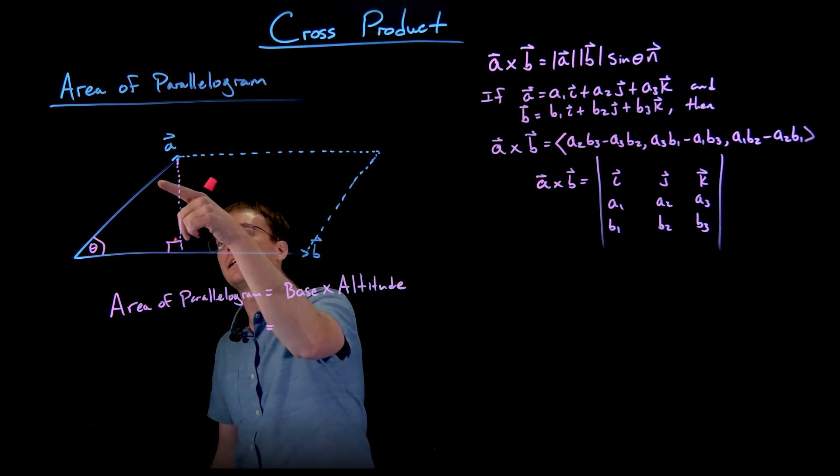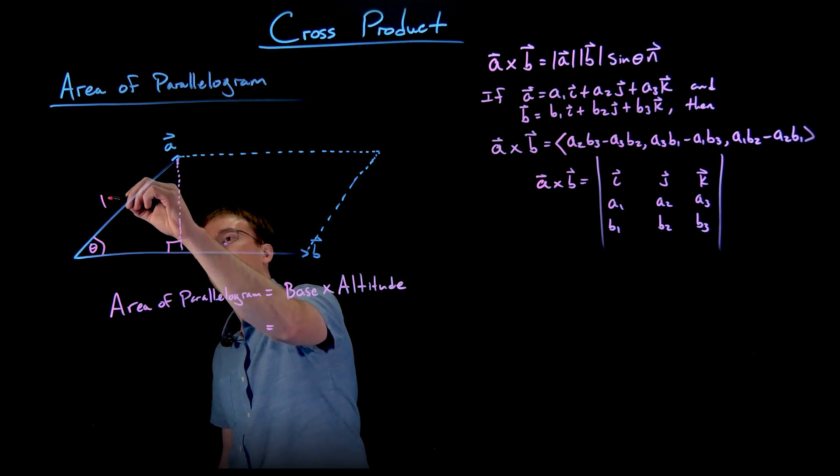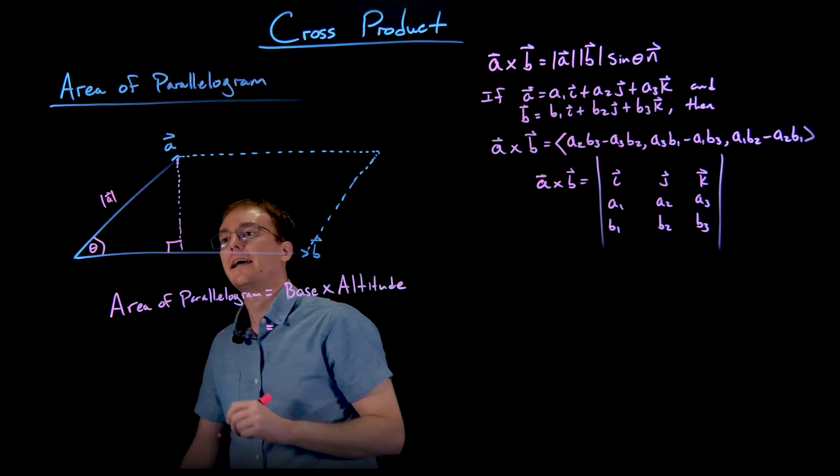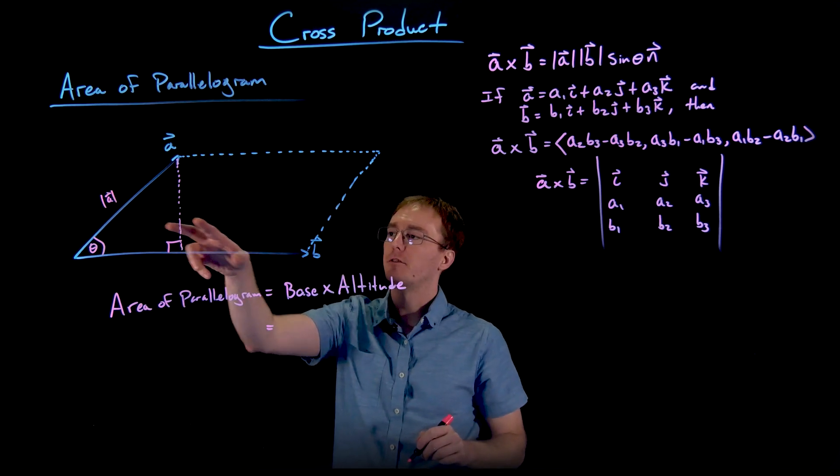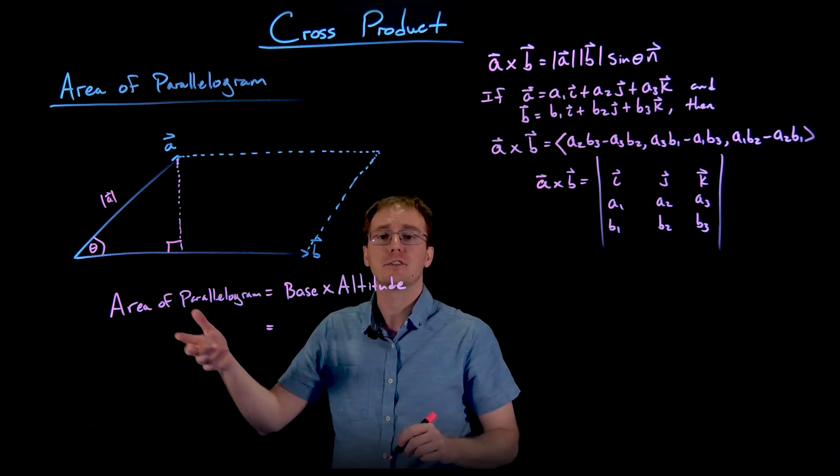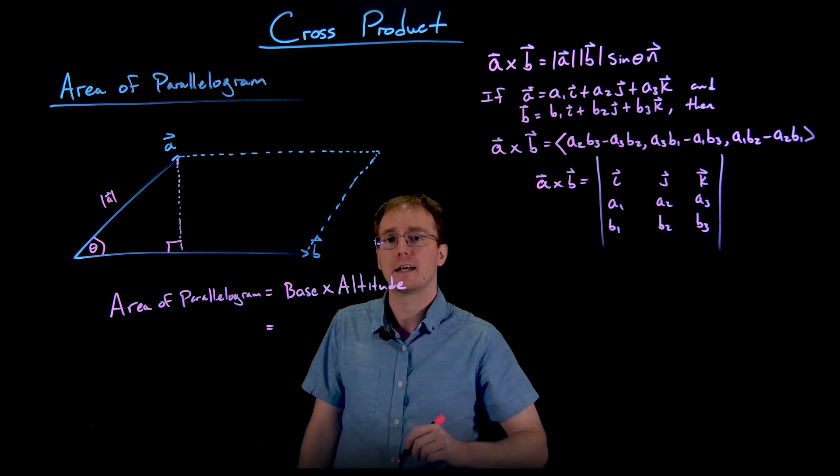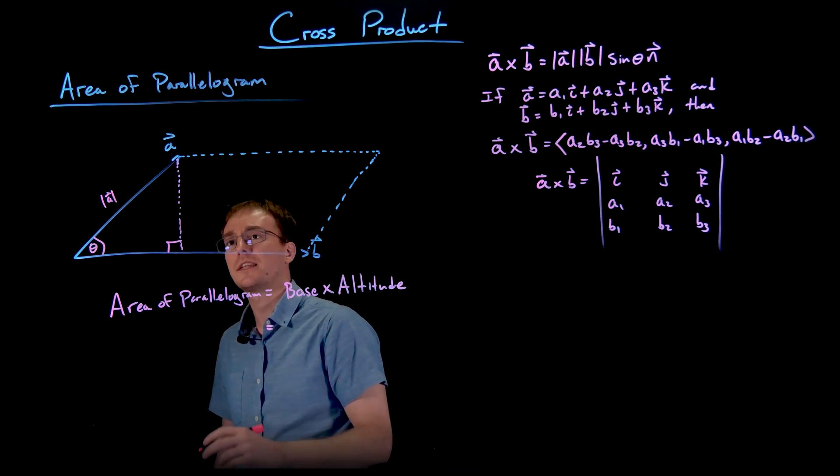And so in our right triangle over here, the hypotenuse is given by the magnitude of our vector A, and we want to find out some information about the side length opposite of our angle between our two vectors, and our sine function is going to help us do just that.